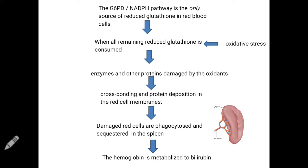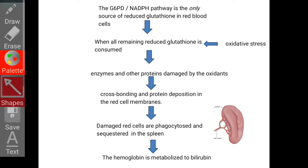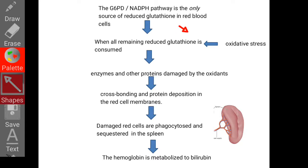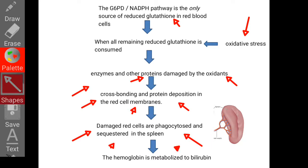Since the G6PD pathway is the only source of reduced glutathione in RBCs, during oxidative stress all the remaining reduced glutathione is consumed. The enzymes and other proteins are damaged by the oxidants, with corresponding protein deposition in the red cell membrane. These damaged red cell membranes are then phagocytized and sequestered by the spleen, where the hemoglobin is metabolized to bilirubin.